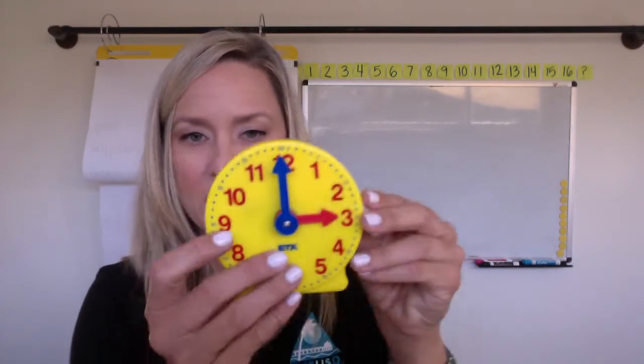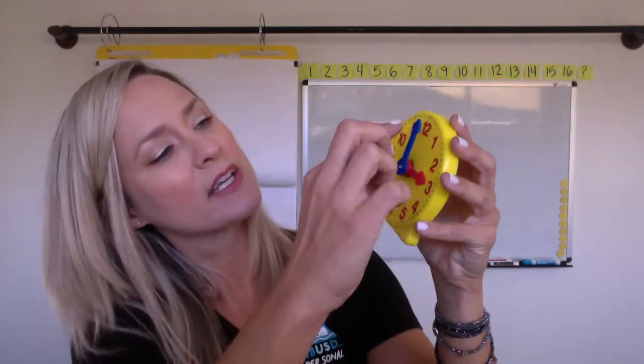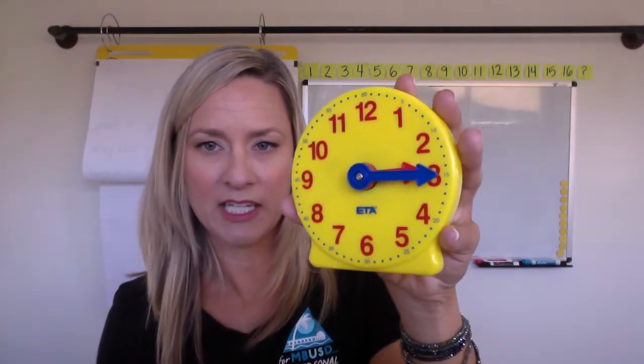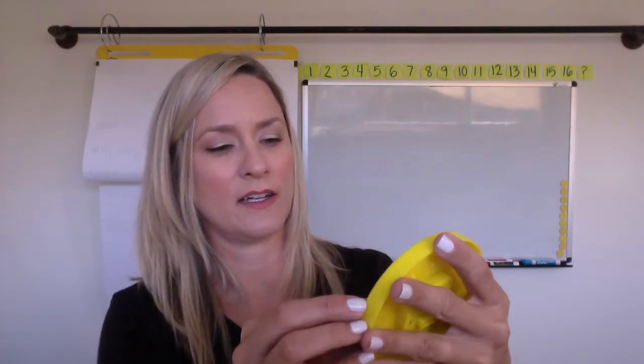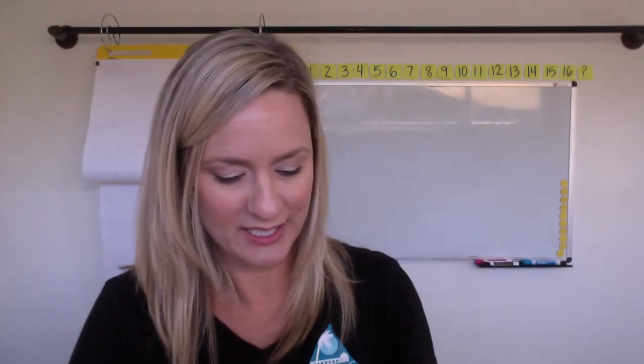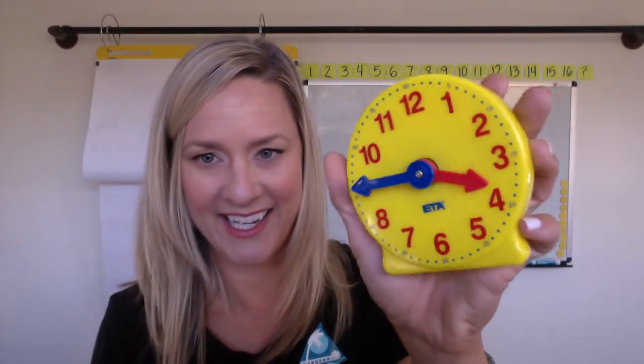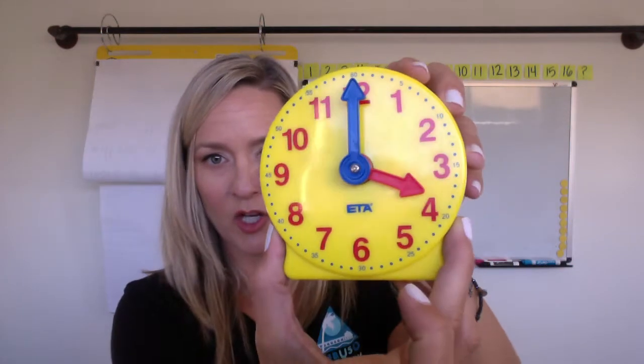All right. So let's try it with three o'clock. That's like after school hours, right? So three o'clock. This would be 3:15. This would be 3:30. Say it with me if you know it. This would be, say it if you know it, 3:45.